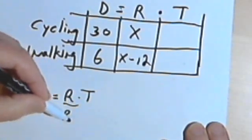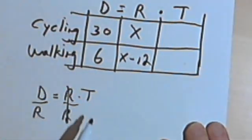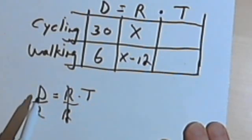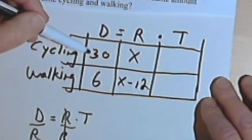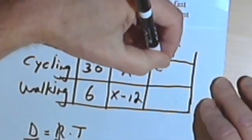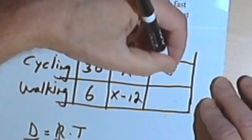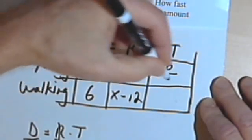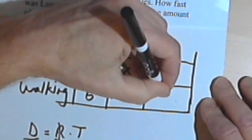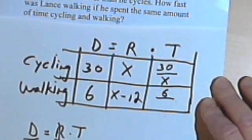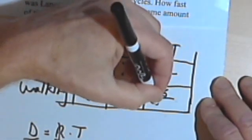In other words, I'll divide both sides by r. And now I know the time is the same as distance over rate. So cycling, his distance is 30, and his rate is x. And when he's walking, he walked 6 miles, that was his distance, and his rate was x minus 12.